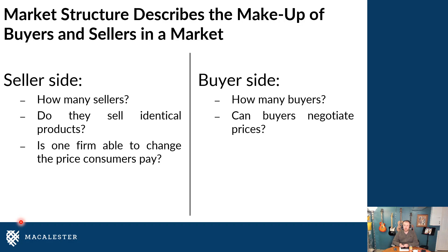You have to ask yourself: how many sellers are there in the market? In this case, how many gasoline stations are there in the Twin Cities, and how many refineries sell to those gasoline stations? Do they sell identical products, or are things different? Do consumers care which firm they go to? With gasoline, you don't really care which gas station you pull up to, if your only objective is to purchase gasoline. Versus, if you're in the market for clothing, you very much care which store you're walking into, because that determines the quality and the different features of the clothing you're interested in buying.